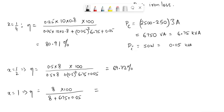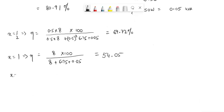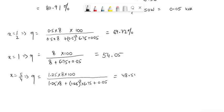When x is 1 and 1 upon 4, x equals 5 upon 4, then η equals, for that we have to substitute x by 1.25, that is 5 by 4, which will be 1.25 into 8 into 100 divided by 1.25 into 8 plus 1.25 squared into 6.75 plus 0.05, which comes out to be 48.55 percent.